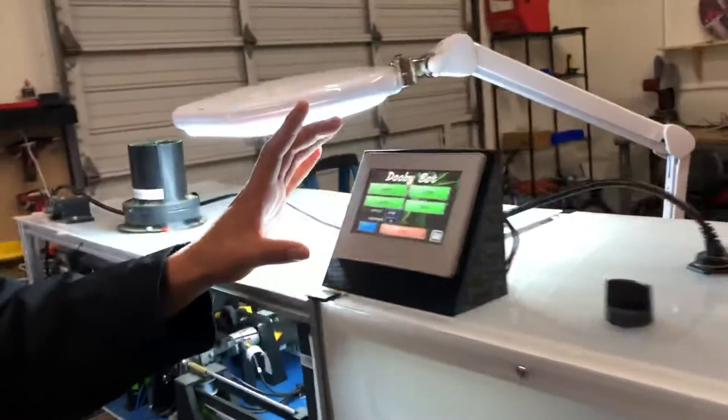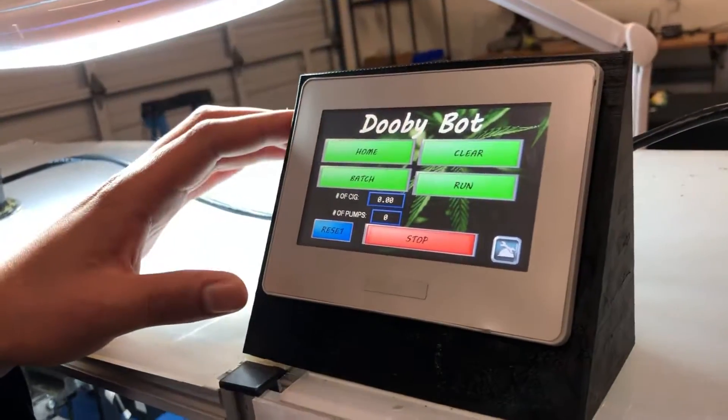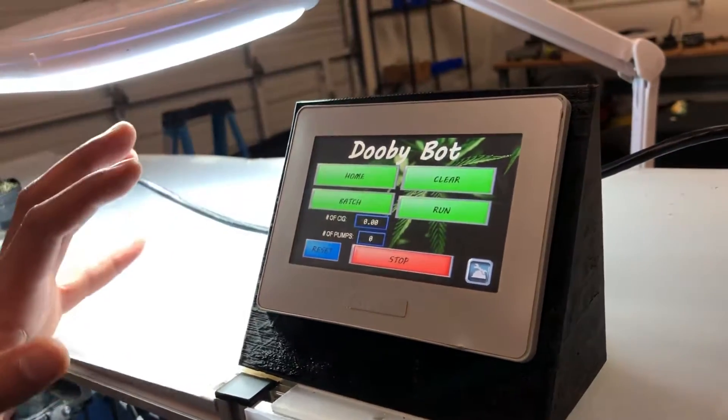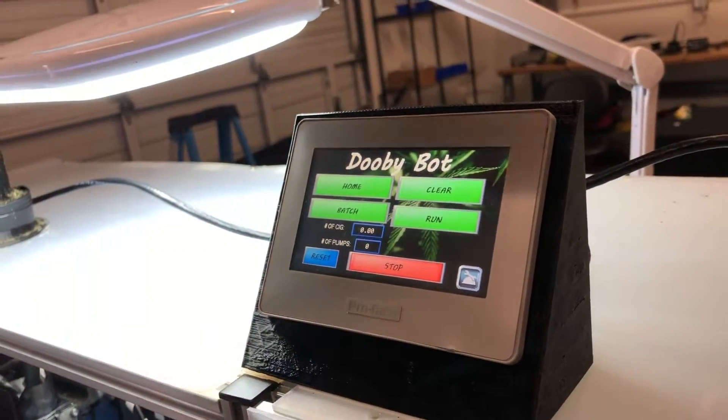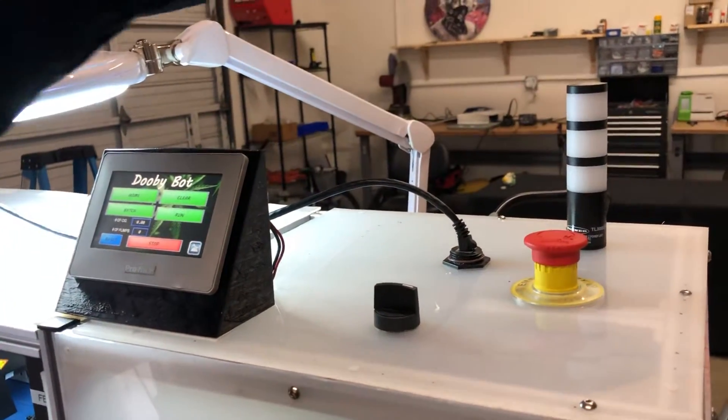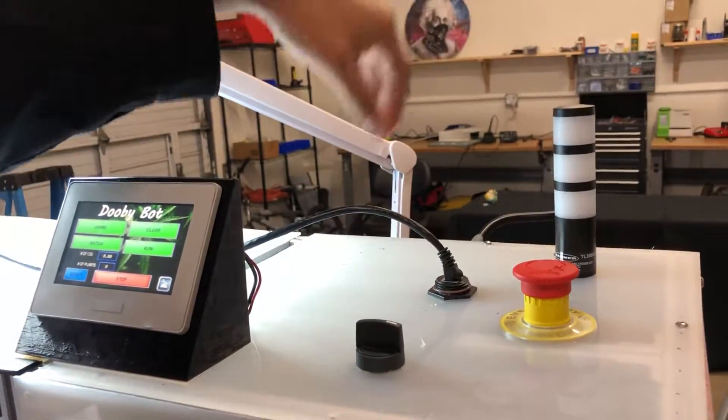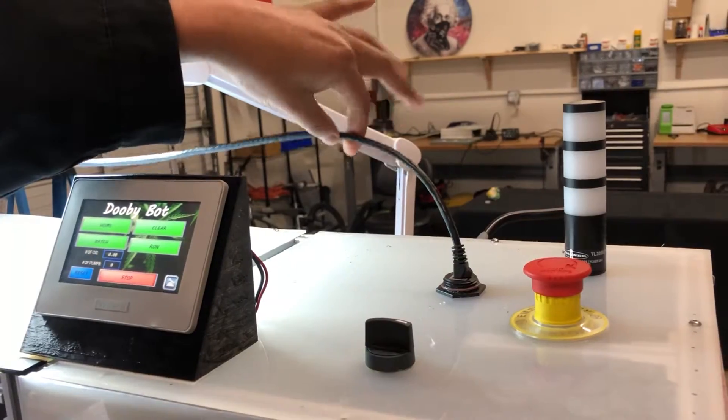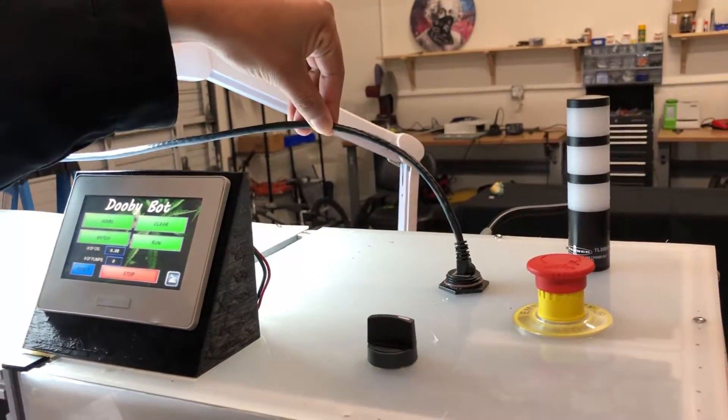So here we have an interface where we have different modes of operation. We have an e-stop in case of an emergency. We also have a stack light and we're communicating with all devices through Modbus.